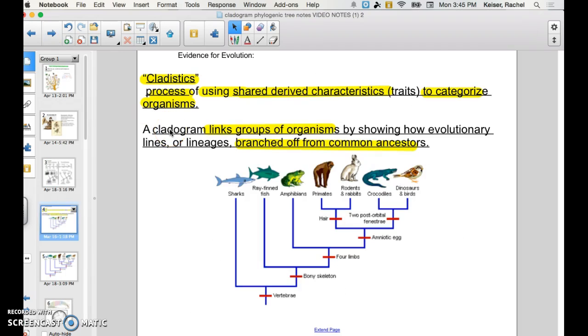So what is cladistics? It's a process using shared derived characteristics and traits to categorize organisms based on the relatedness and how many traits that they share together. And it also shows branching off moments where species populations have branched off and evolved into different species.